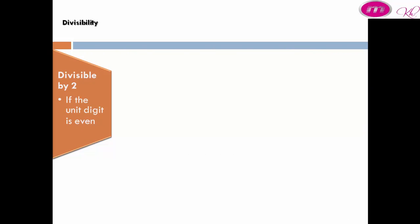Divisible by 2: a number is divisible by 2 if the unit digit is even. For example, 212 is divisible by 2 because the unit digit 2 is even.